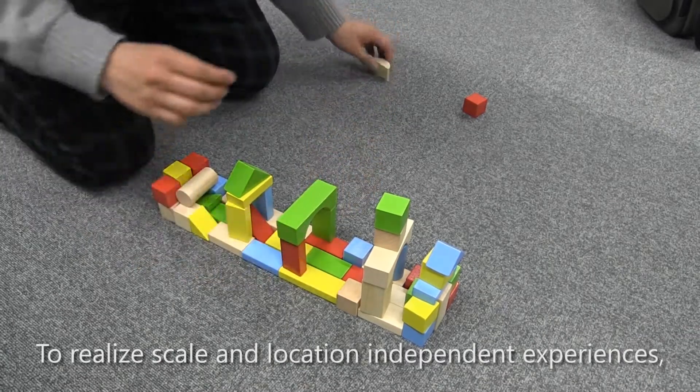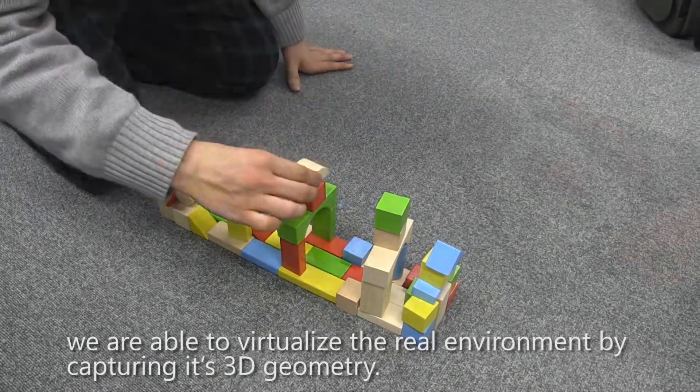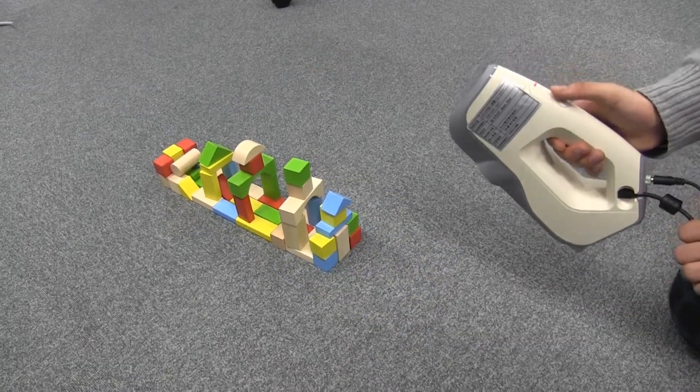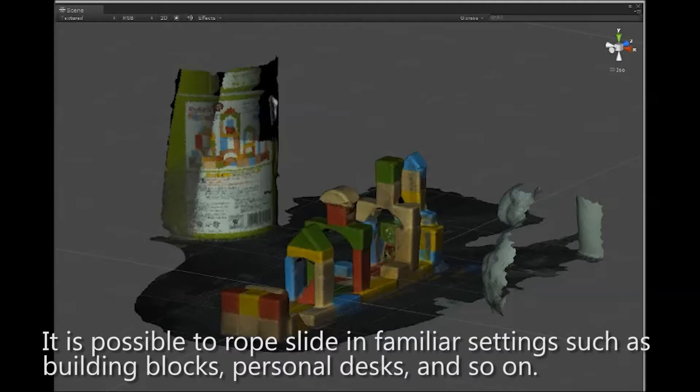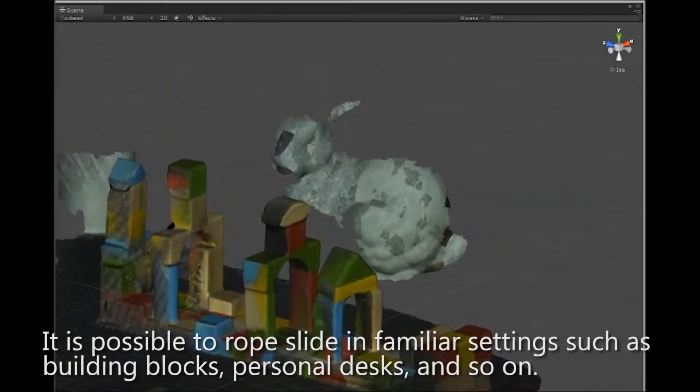To realize scale and location independent experiences, we are able to virtualize the real environment by capturing its 3D geometry. It is possible to rope slide in familiar settings such as building blocks, personal desks, and so on.